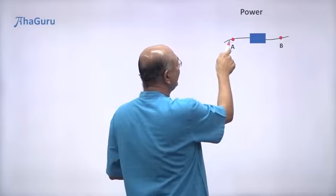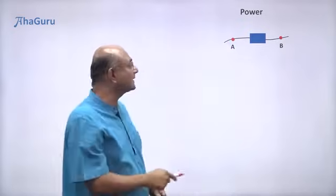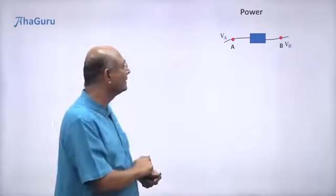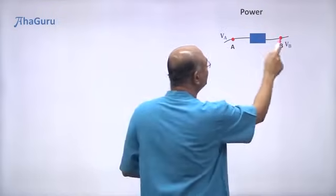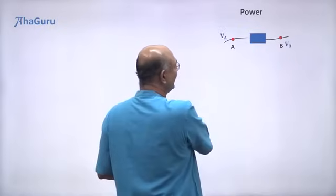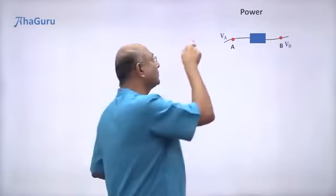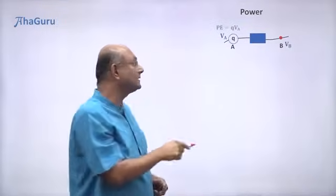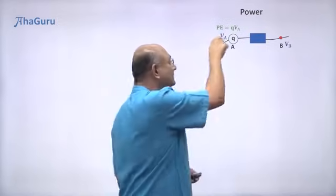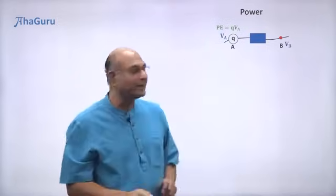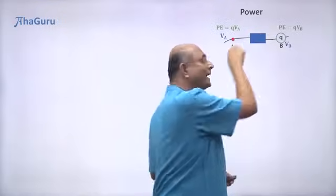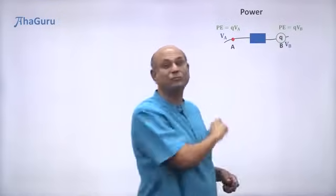This point is A and that end of the box is B. There is a potential here which is VA and a potential there which is VB. The potential drop from A to B is VA minus VB. Now if I put a charge Q at A, this charge has a potential energy Q times VA. When the same charge goes through that box and comes to point B, its potential energy will be Q times VB.